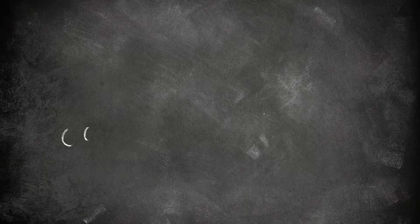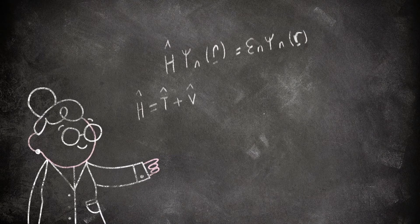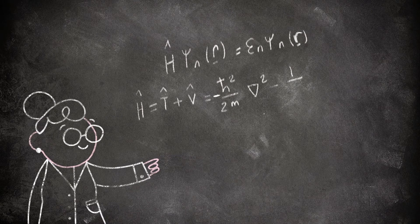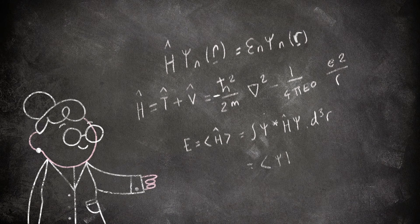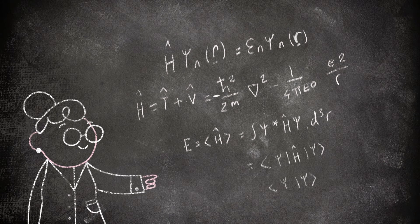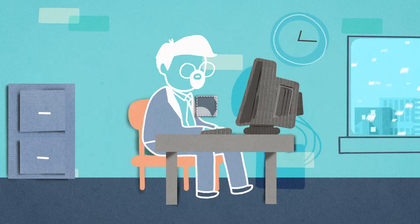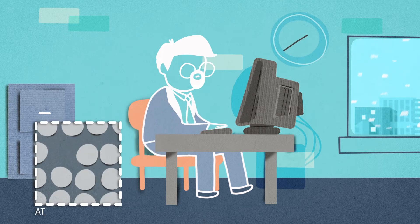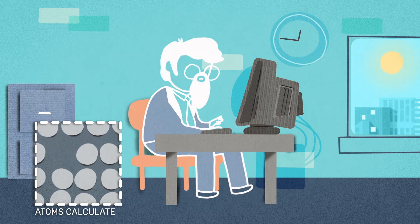How can we do all of this? We use mathematics to model how our material behaves, programming computers to solve these complex equations. But early computers were very slow and could only handle calculations for a small number of atoms.